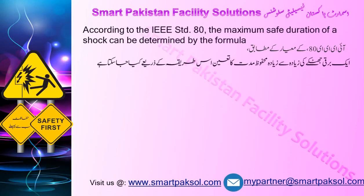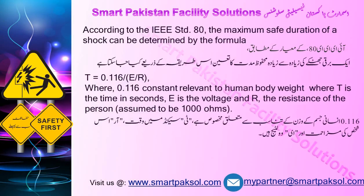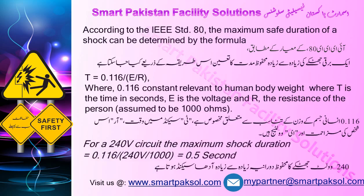According to IEEE Standard 80, the maximum safe duration of a shock can be determined by the formula given. Where 0.116 is a constant relevant to human body weight, T is the time in seconds, E is the voltage, and R is the resistance of the person, assumed to be 1000 ohms. For a 240-volt circuit, the maximum shock duration is half of a second.